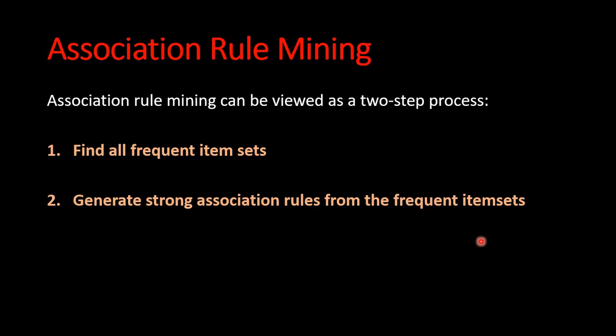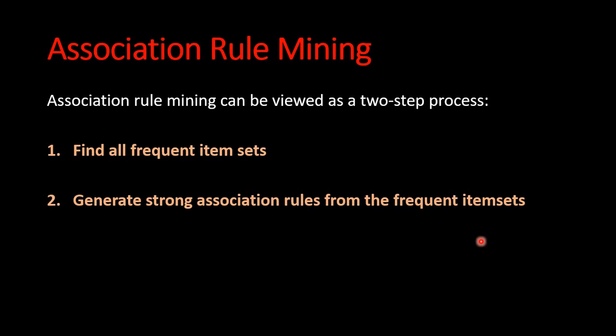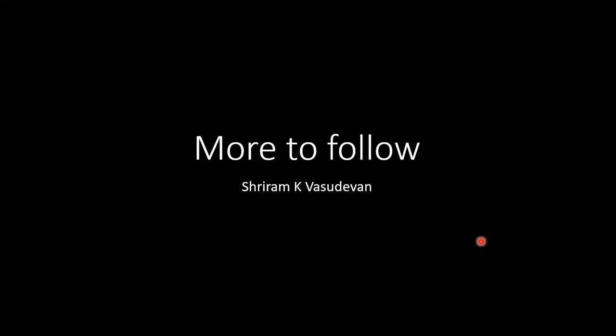Association rule mining can be viewed as a 2-step process: first, we find all the frequent item sets, and then we generate strong association rules from the frequent item sets. We are going to learn the process of identifying both steps, and the Apriori algorithm is the most famous method for this — I am going to talk about it in the next session.